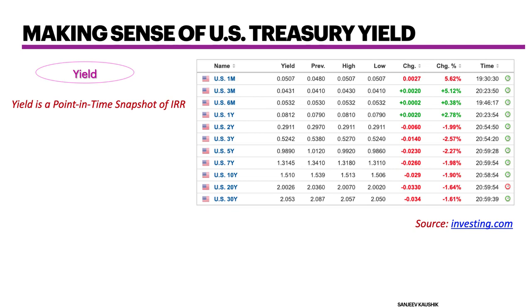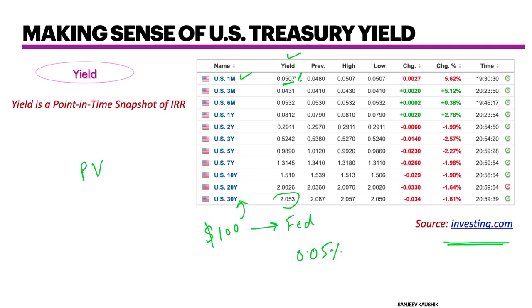It's all about the present value of the bond. The US one-month Treasury yield of 0.05% signifies that if I were to lend $100 to the Fed — essentially the US government — I would get 0.05% in return. And if I lend the same $100 to the US for 30 years, my yield is 2%. So roughly 2% of that $100 is what I would receive every year for 30 years.